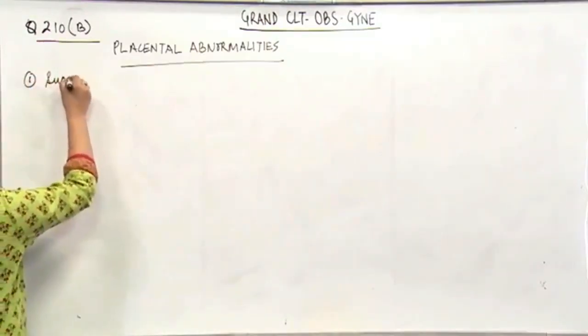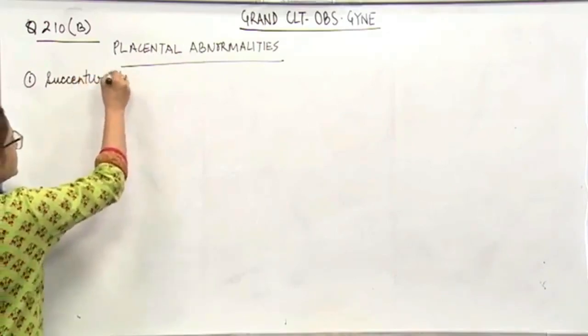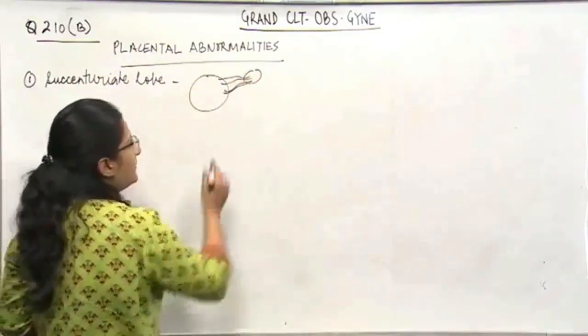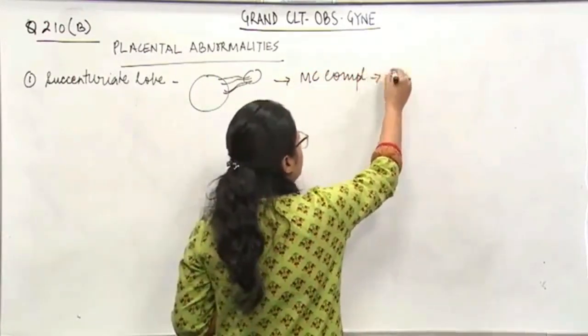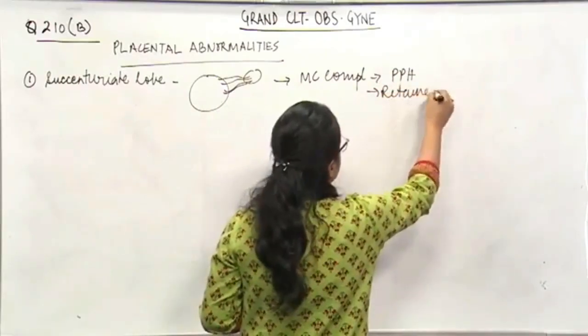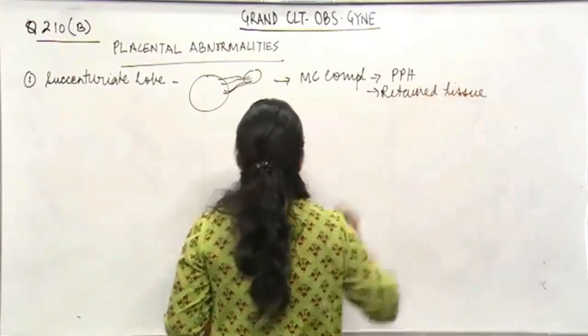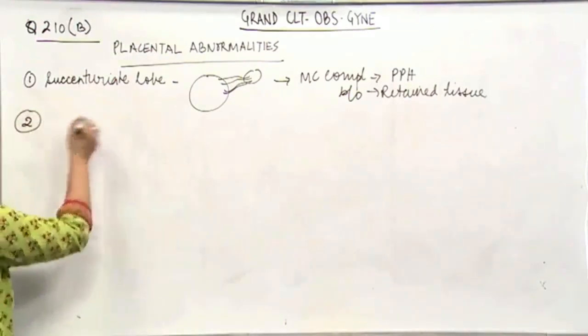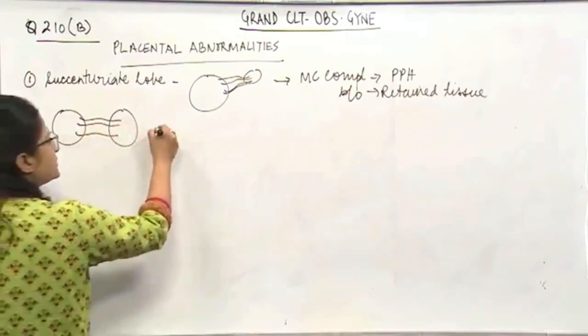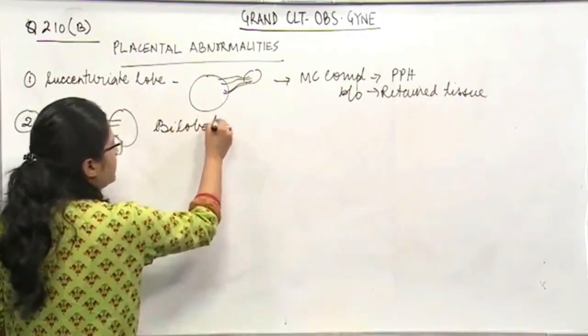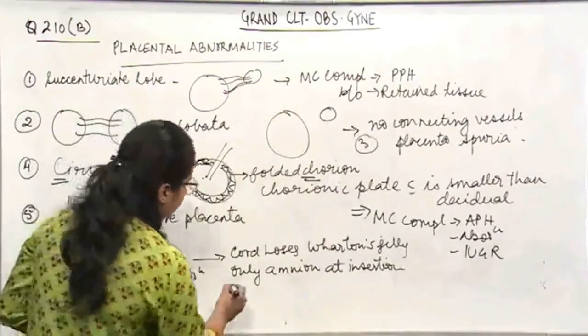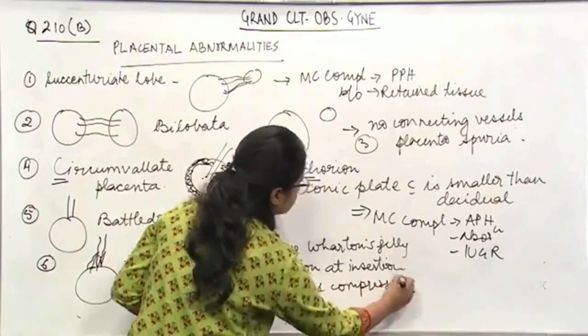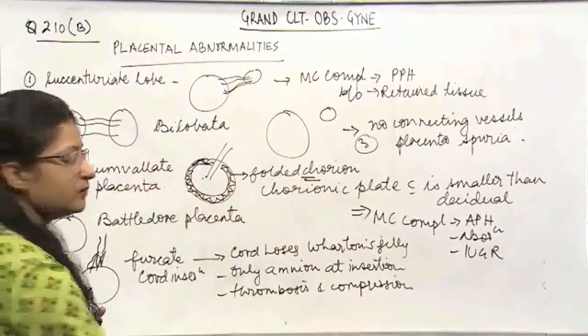The first one is a succenturiate lobe, in which there is an additional lobe, there is this lobe and there is this lobe, there is a leash of vessels connecting. So this most common complication with this would be a PPH because of retained tissue. Then, if these two lobes are equal with the leash of vessels, this is called bilobata. Then the other thing is that if there is an antibiotic, so it can undergo thrombosis and compression. Remember these points.